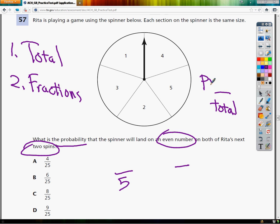On the top, I'm going to put my preferred, which is the preferred here would be the number of even numbers. So two and four are even, so there is a two out of five chance that I will land on an even number.